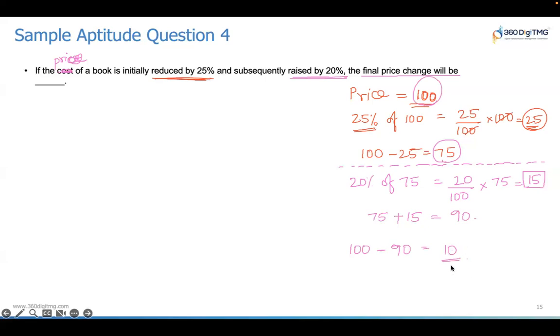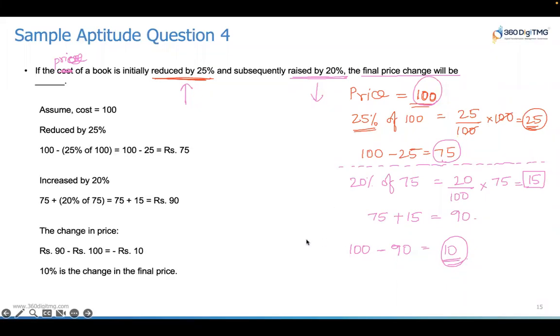If you want to represent this in percentage terms, you can always do that. 10 is 10% of 100. So when you look at the initial price, you raise the price by 10%. If you increase it by first 25%, then reduce it by 20%, the final price change would be 10%. That's how you need to answer. And instead of 100, if you take any number, it will be 10% only. At the end of the day, you can try out with various numbers also, you'd get the same answer.